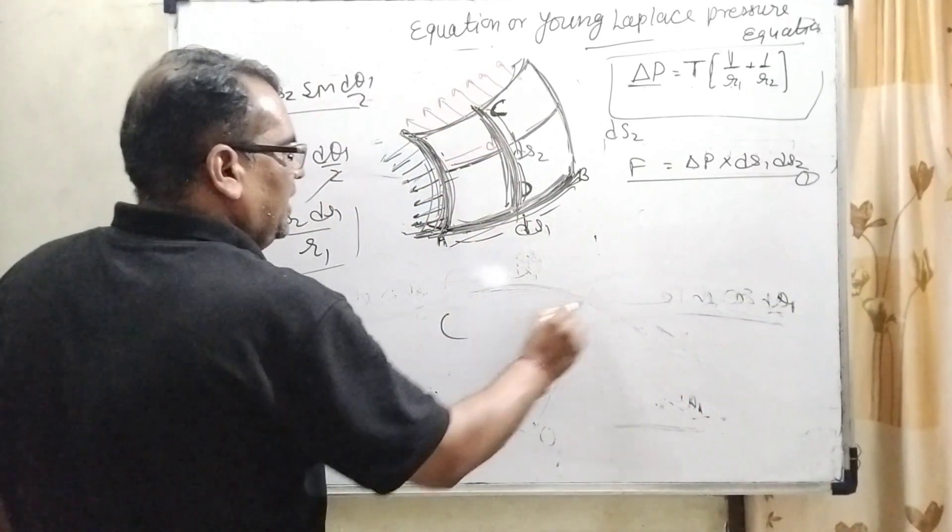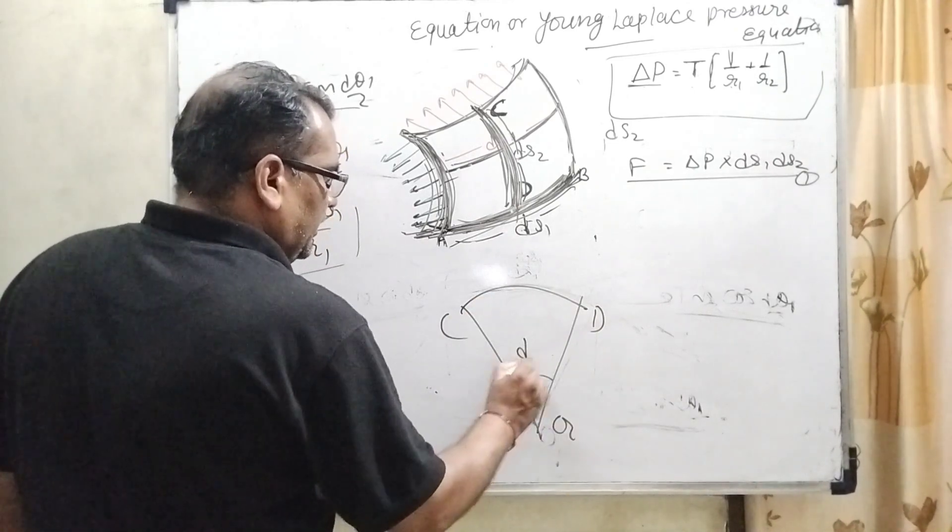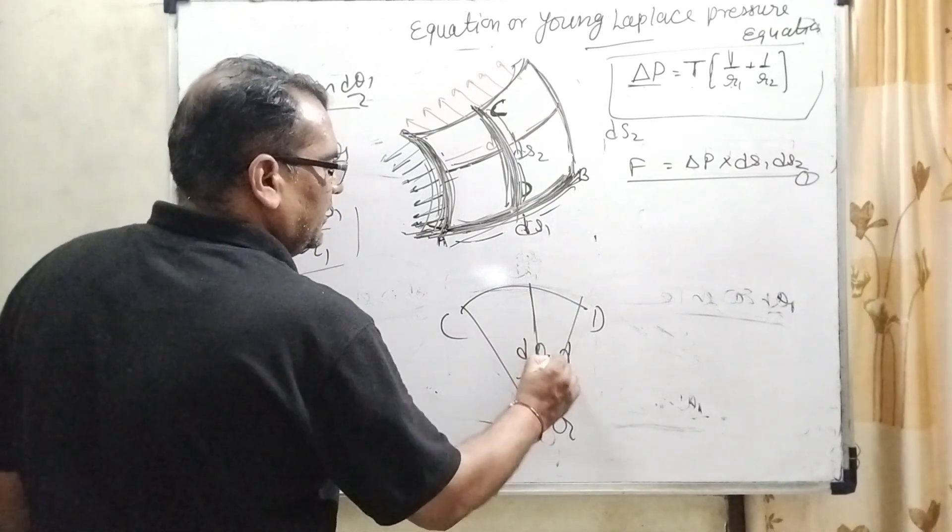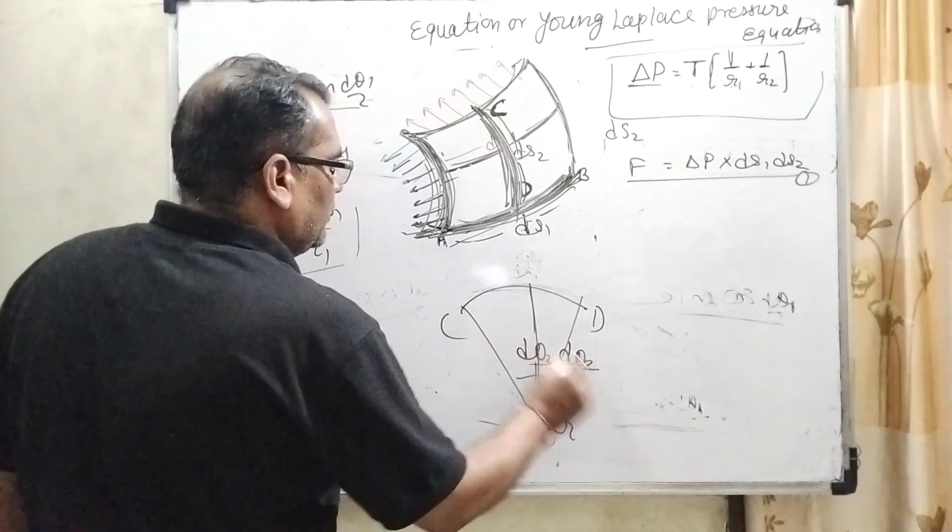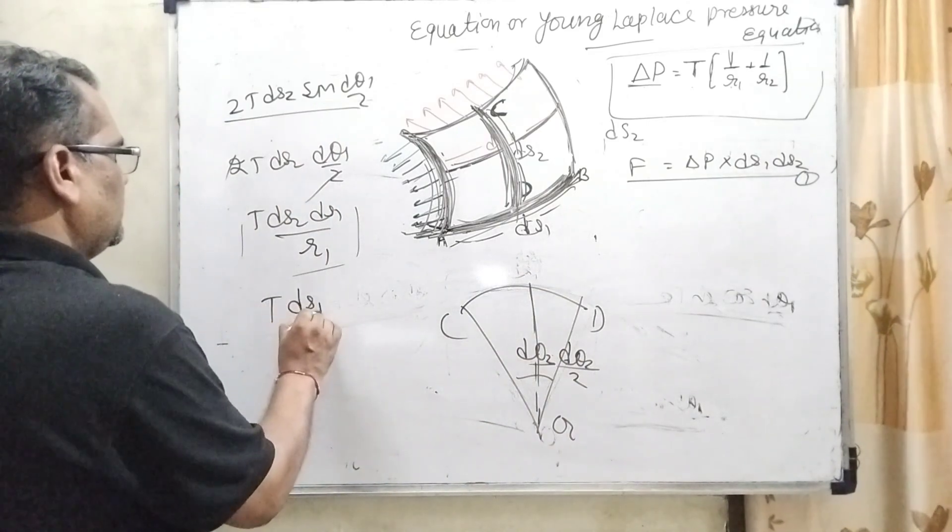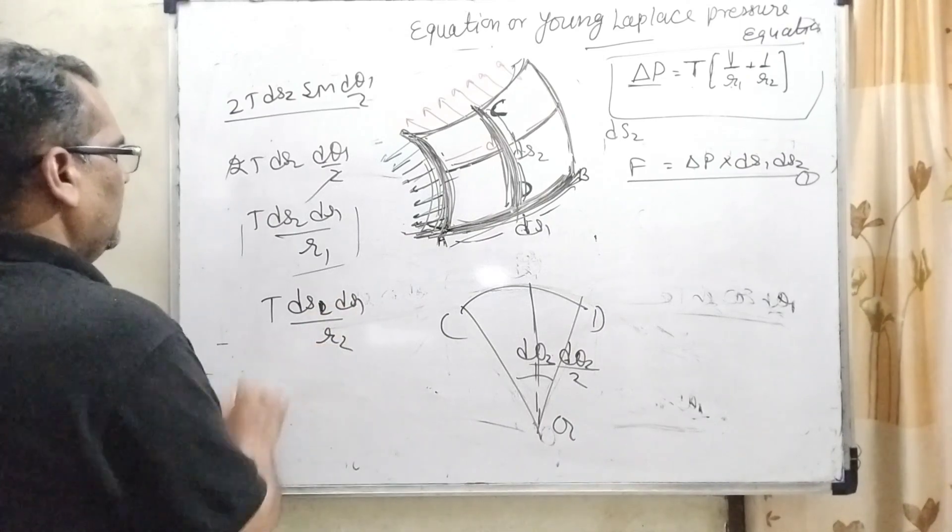The same thing we have to apply for the second curvature. Second curvature means CD curvature. Consider this is O2, D theta 2, and drawn angle bisector becomes D theta 2 by 2. Same things, all these things same. So T DS1, and R2.